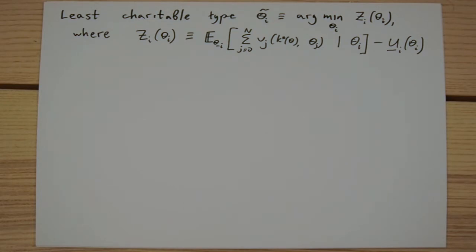This is not the most intuitive definition, but as we will see, the least charitable type will be the one for whom the individual rationality constraint will be the most binding as compared to all other types of the same player.